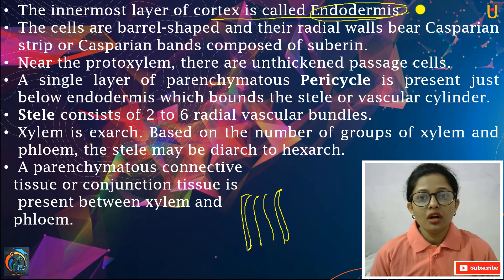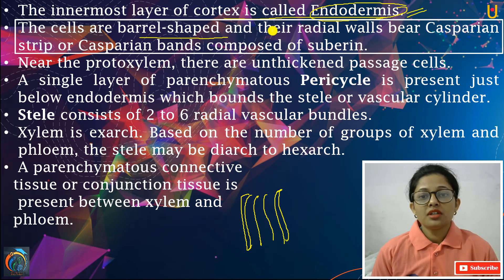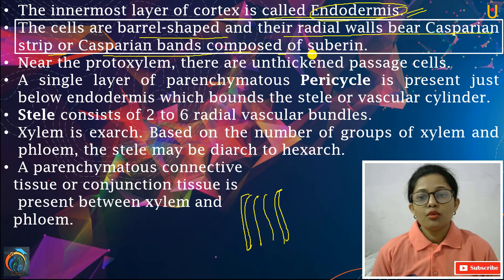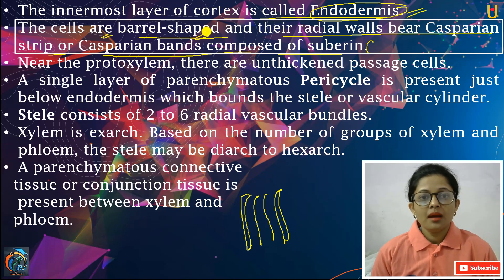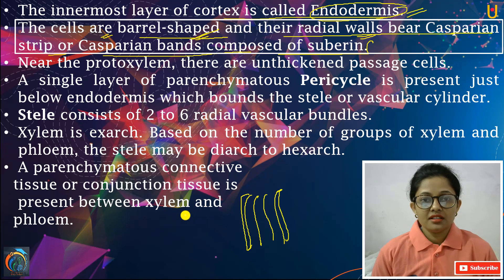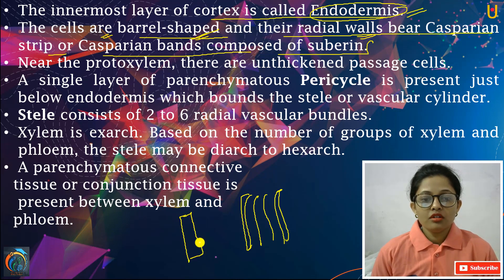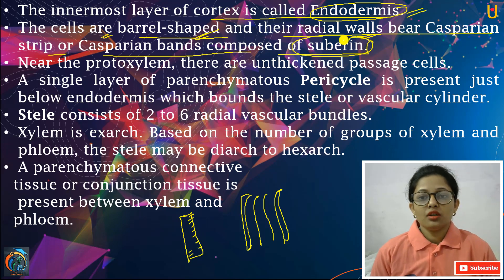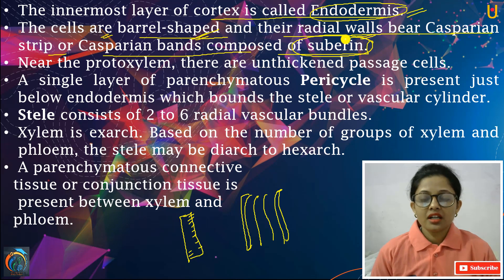The innermost layer of cortex is called endodermis. The cells are barrel shaped and their radial walls wear Casparian strips or Casparian bands, composed of suberin. Yahan pe jo endodermis hoti hai, endodermis ka matlab hai innermost layer of cortex. Barrel shaped ki hoti hain, inke jo cells hote hain, barrel shaped ki hoti hain. Radial walls hoti hain jinke upar bands present rehte hain. Yah bands kiske bane hote hain? Suberin ke bane hote hain. Suberin is a waxy/thick substance — like cuticle substance hoti hai na, same as it is, suberin bhi hoti hai.